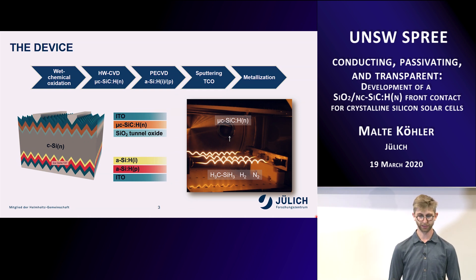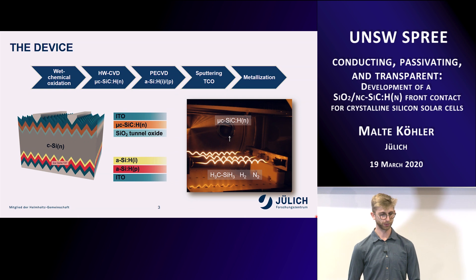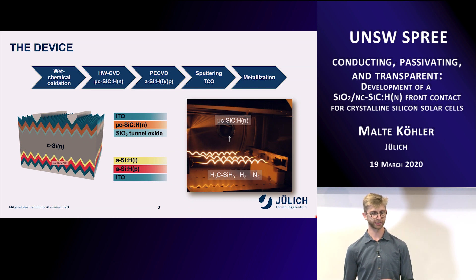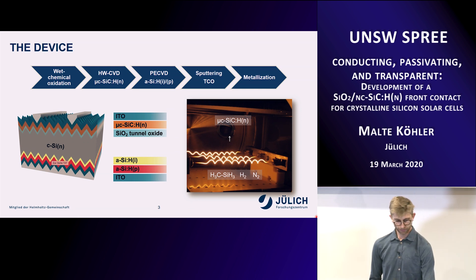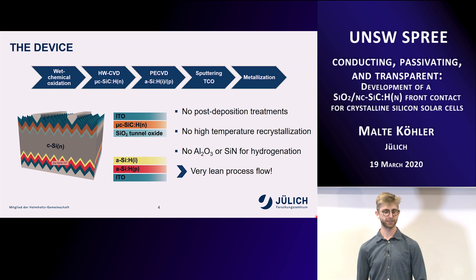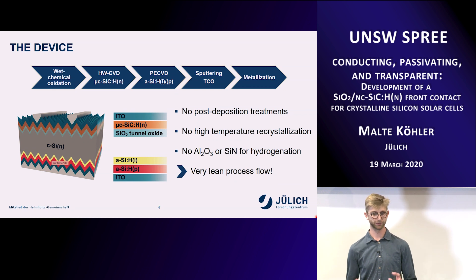After the silicon carbide, we fabricate the backside. We have an amorphous silicon heterojunction baseline in Jülich, but it's also possible to use any other backside junction. We do an HF dip first to remove the silicon oxide from the backside, then deposit PECVD amorphous silicon. Then we sputter TCO on both sides and finalize with metallization. A great advantage of this contact is that no post-deposition treatments are necessary. In the as-deposited state, silicon carbide is very well passivating — we need no high-temperature recrystallization as for polysilicon, nor any additional hydrogenation layers that have to be removed. The process flow is very lean, which is why we believe it might have a future.